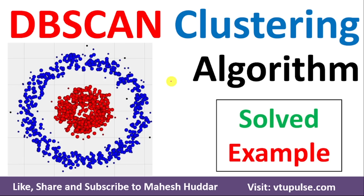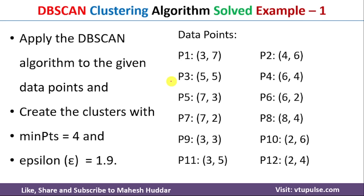Welcome back. In this video, I will discuss how to apply the DBSCAN clustering algorithm to given data points to form clusters. We have been given 12 data points, P1 to P12. We need to apply the DBSCAN algorithm to form clusters with minimum points equal to 4, meaning each cluster should contain at least 4 points, and the distance between each data point within a cluster should be less than or equal to 1.9.